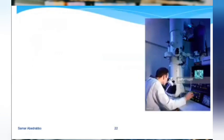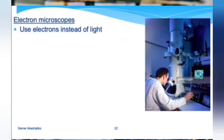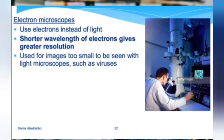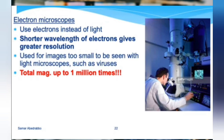Now we're going to talk about electron microscopes. Everything covered so far has been light microscopes — bright field, dark field, and fluorescent. Light microscopes can see things that are micrometers in size, but to study viruses that are measured in nanometers you need electron microscopes. Electron microscopes use electrons instead of light, and since electrons have a very short wavelength you get much higher resolution. The total magnification with electron microscopes can reach up to one million times, compared to 1,000 times with a light microscope.